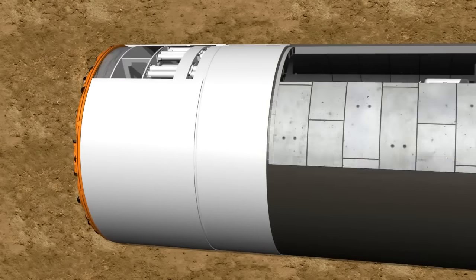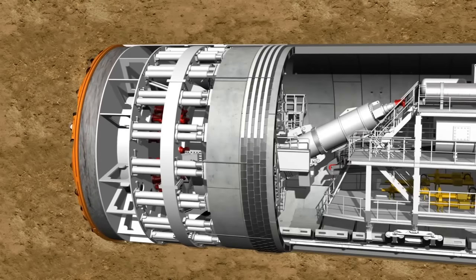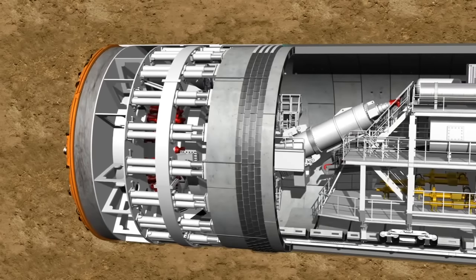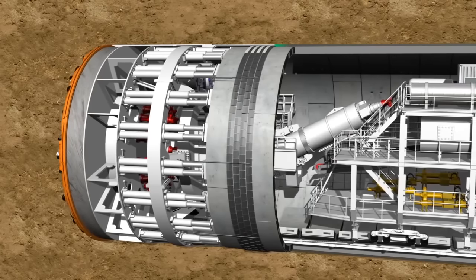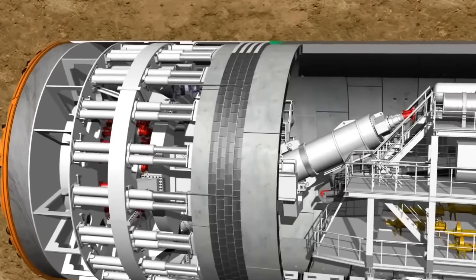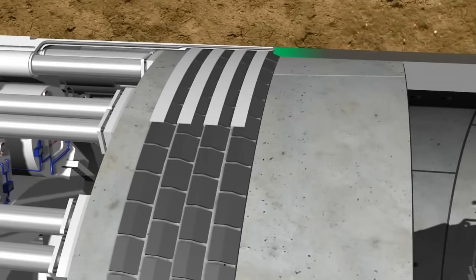The end of the shield, the so-called tail skin, is equipped with a circular tail skin sealing. This provides a seal between the sealed structure of the shield machine and the segment ring. This, in turn, guarantees the necessary sealing between the interior working space and the exterior earth pressure.